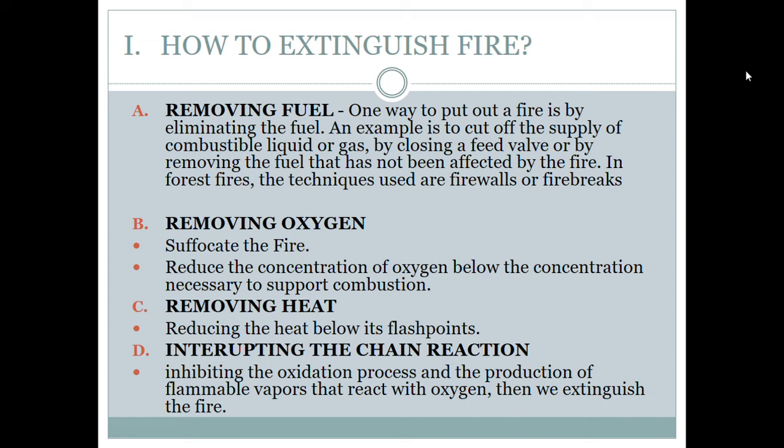How to extinguish a fire? Extinguishing a fire is based on the fire triangle — we simply remove one of its elements. First, removing the fuel: by removing one element from the fire triangle, the fire will be extinguished. For example, in the stove, the fuel is the LPG, so we simply turn off the LPG and the fire will go out. In forest fires, techniques such as firewalls or firebreaks are used.